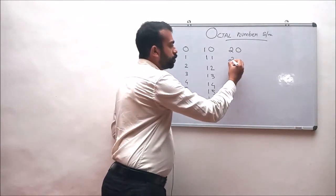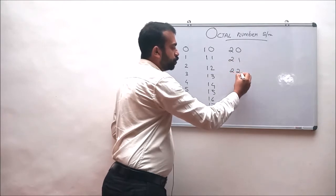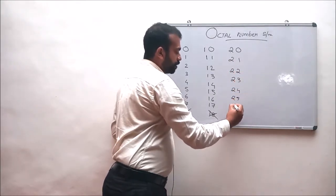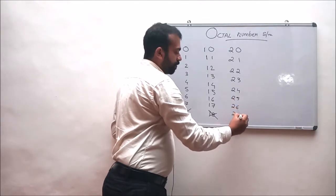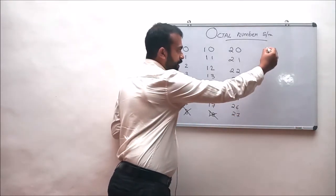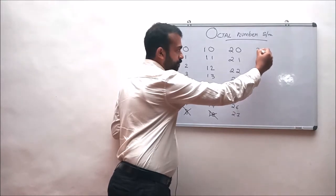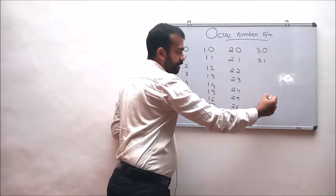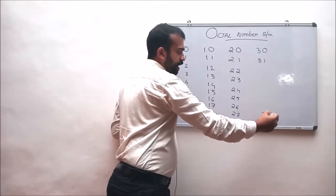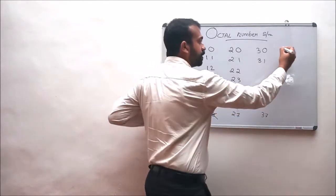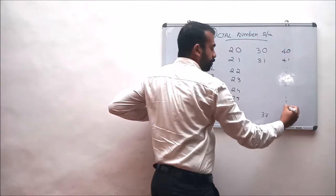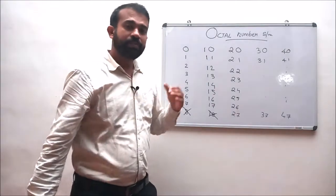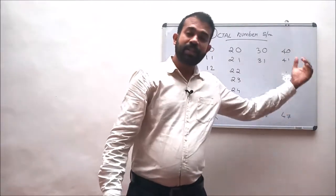So the next numbers are 21, 22, 23, 24, 25, 26, 27, and after 27 we write it as 30 (0 with a prefix of 3). So the next numbers are 31, 32, 33, etc., up to 37, and after 37 we write it as 40, 41, etc., up to 47. This set of numbers goes on to an infinite set of limits.